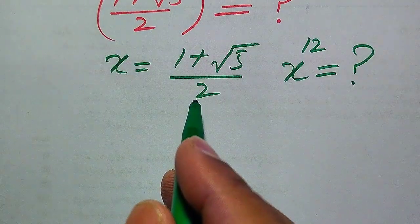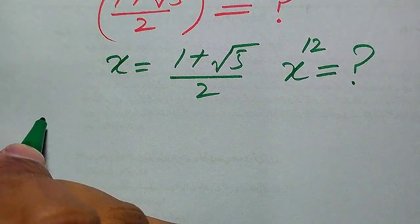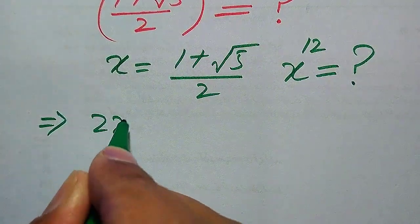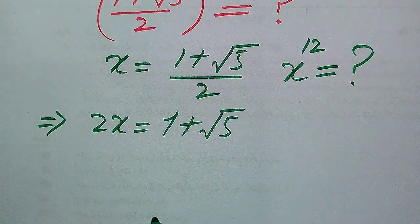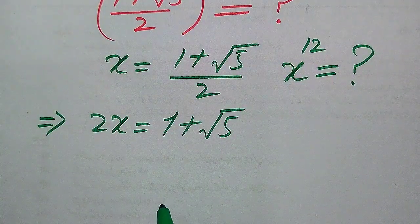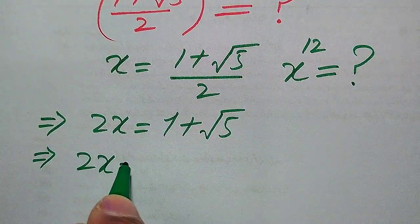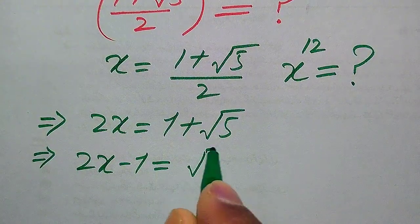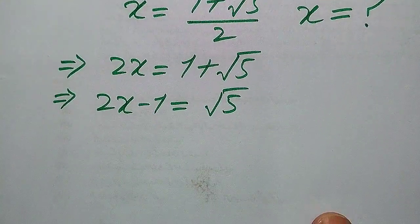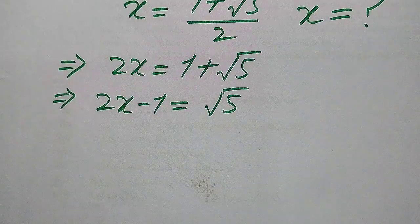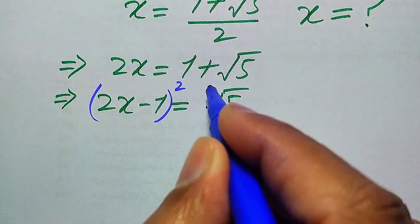To find the value of x to the power of 12, we first simplify the terms. We move 2 from the right-hand side to the left-hand side, giving 2x equals 1 plus square root of 5. Then we move plus 1 to the left-hand side, so it becomes 2x minus 1 equals square root of 5. In the next step we take squaring on both sides.